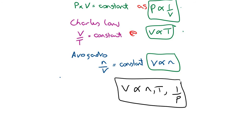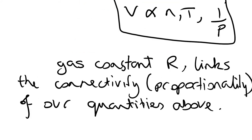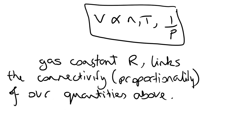So volume is proportional to the number of moles times temperature, but inversely proportional to pressure. To convert proportionalities into an equation, we need to introduce a new constant called the constant of proportionality. Just as in math where two quantities related by a graph have a slope connecting them, here we introduce a new constant R — the gas constant — that relates the proportionality of volume, temperature, and pressure. The gas constant R links the proportionality of our quantities, so the equation becomes PV = nRT: pressure times volume equals number of moles times the gas constant times temperature.